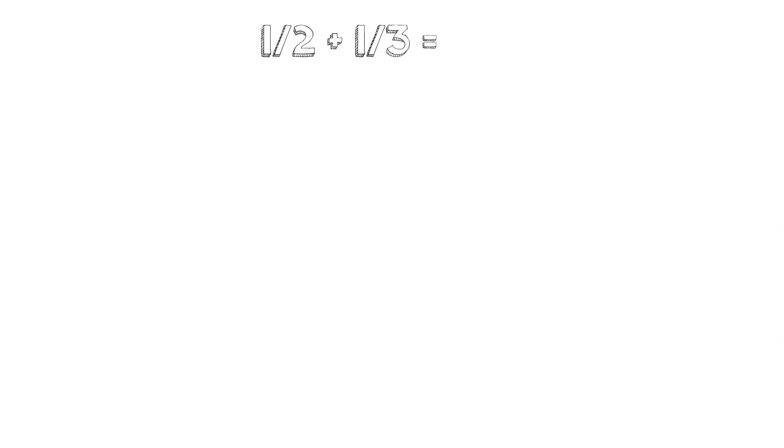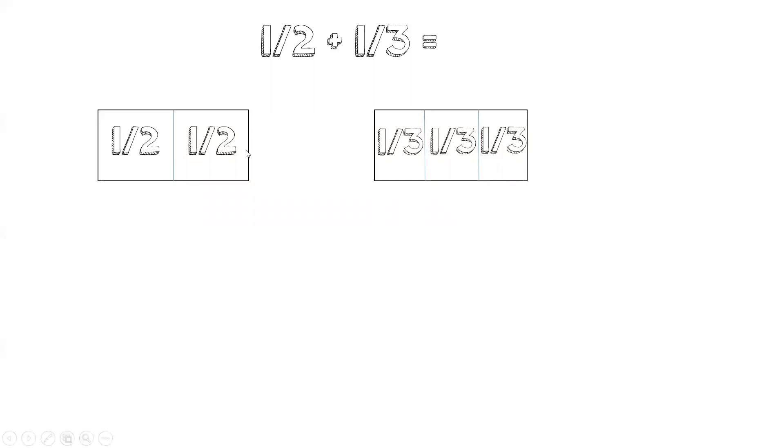So today we're going to talk about how do we add fractions with different denominators. For example, we have one-half plus one-third. So how does this look like? Here is a half, there's the other half, and here is a third broken up into three parts. We can see here that the halves are not the same as the thirds. So since they're not the same, we're not going to be able to add them.